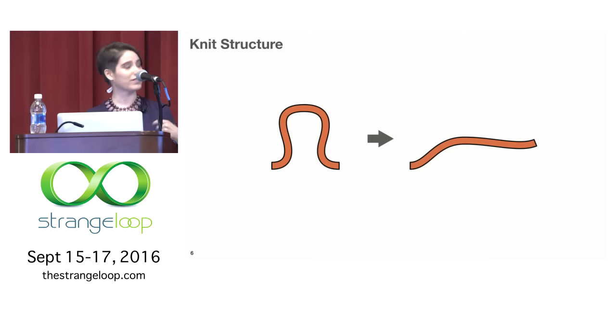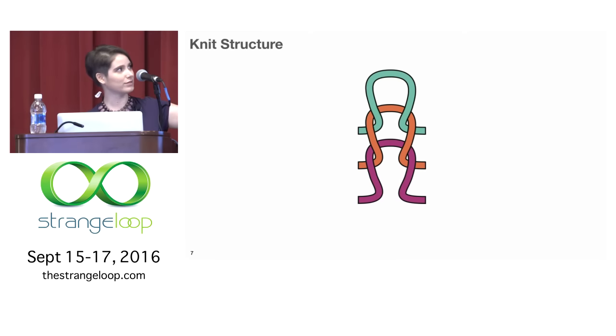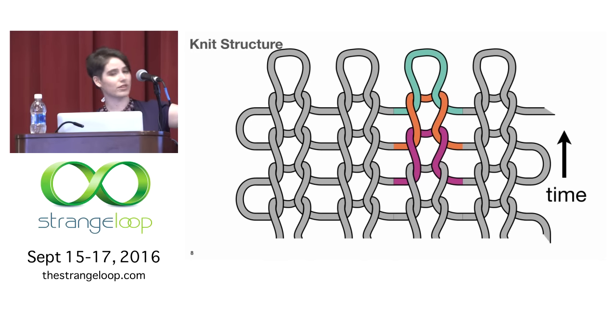So this is one loop, kind of. It's not really a loop because you could pull on it and it would just turn into a piece of string. But if we give it some buddies up and above, they'll hold it in place. So now you see the one in the middle, the orange one, can't go anywhere until at least the one on the top goes first.